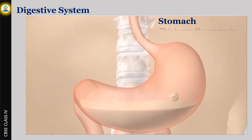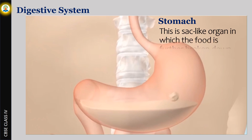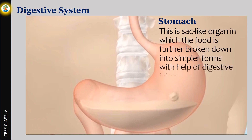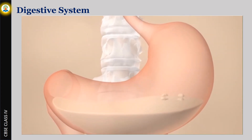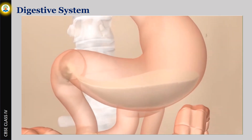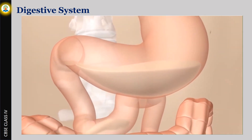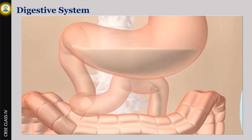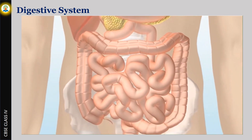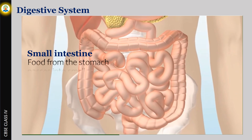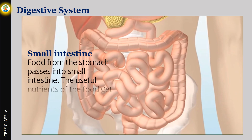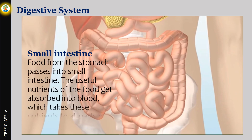Stomach: This is a sac-like organ in which the food is further broken down into simpler forms with the help of digestive juices. Small intestine: Food from the stomach passes into the small intestine. The useful nutrients of the food get absorbed into the blood, which takes these nutrients to all parts of the body.